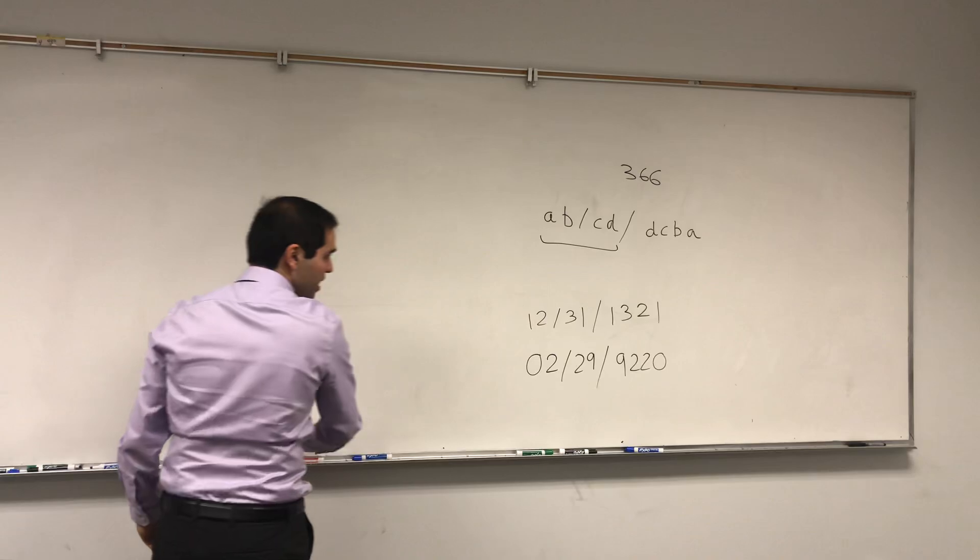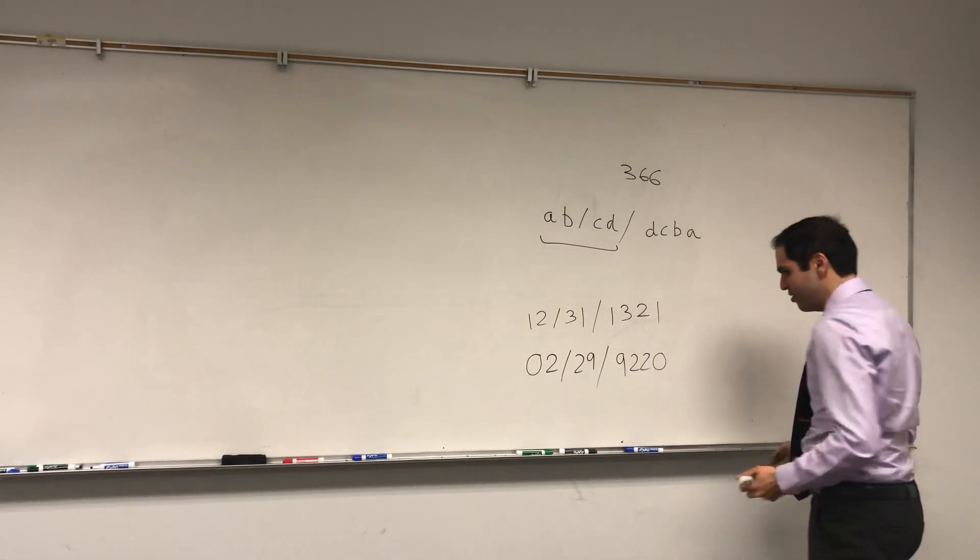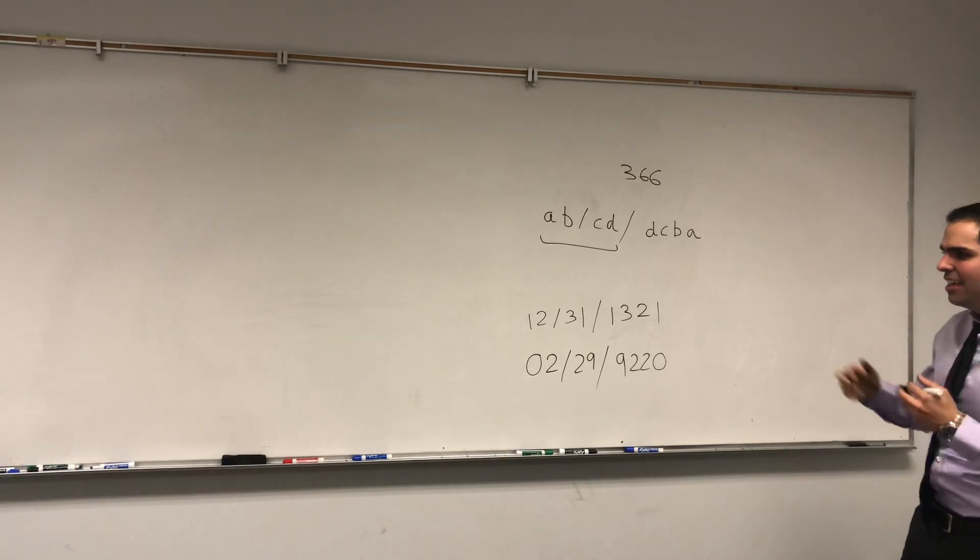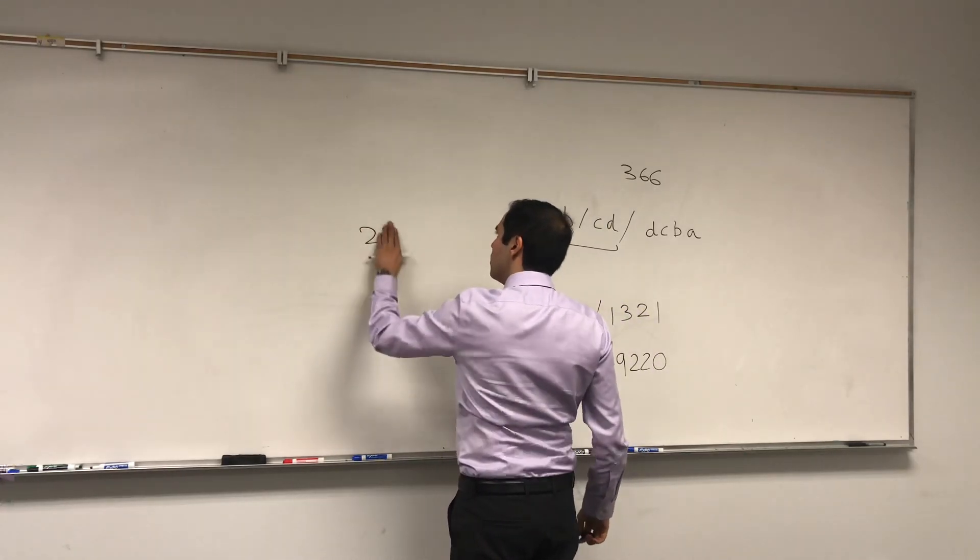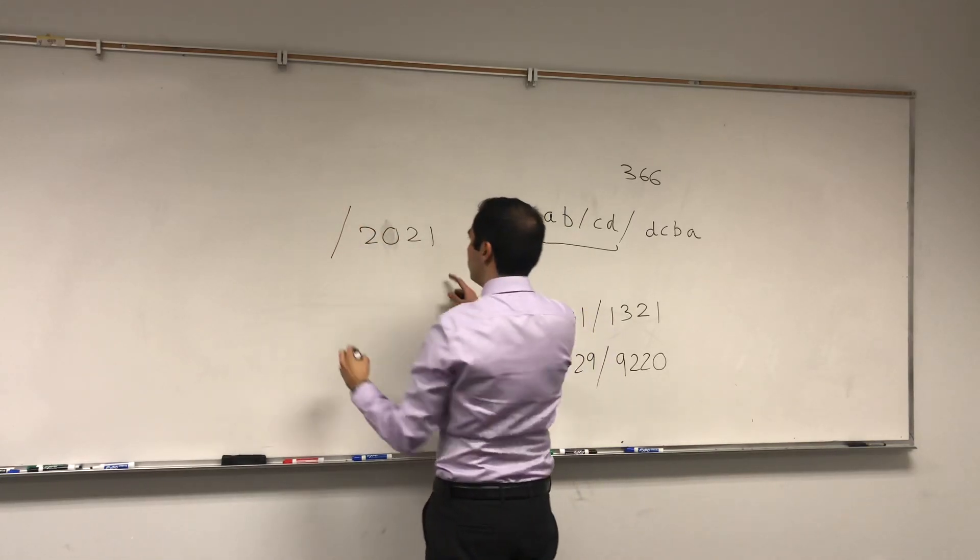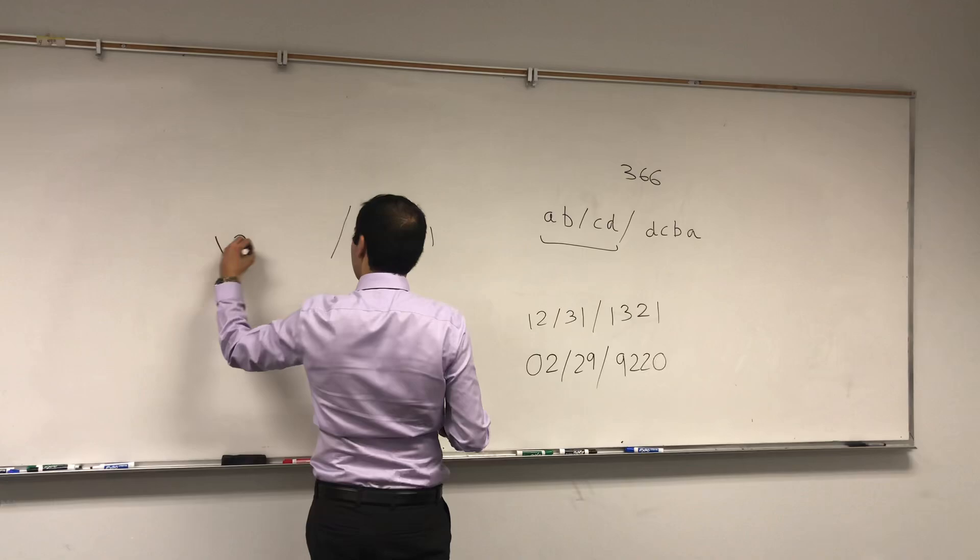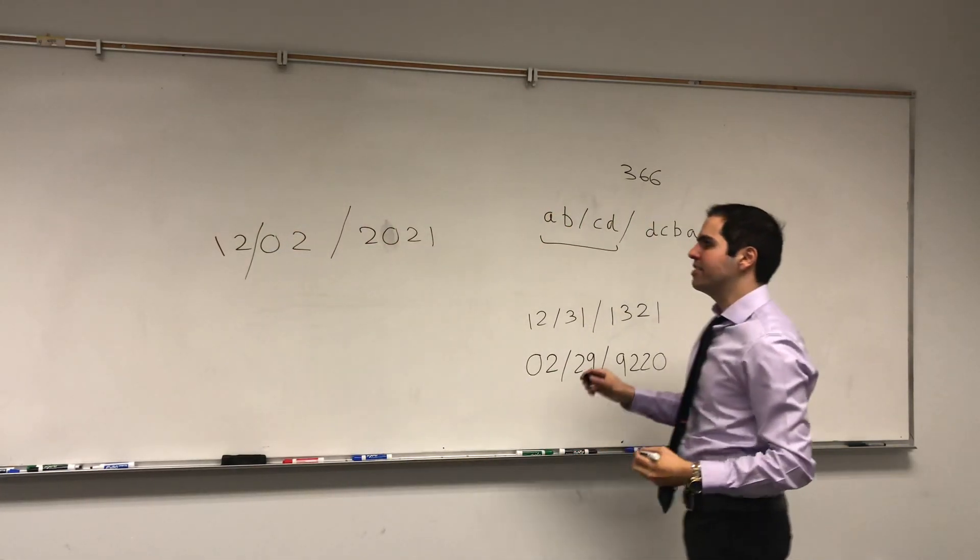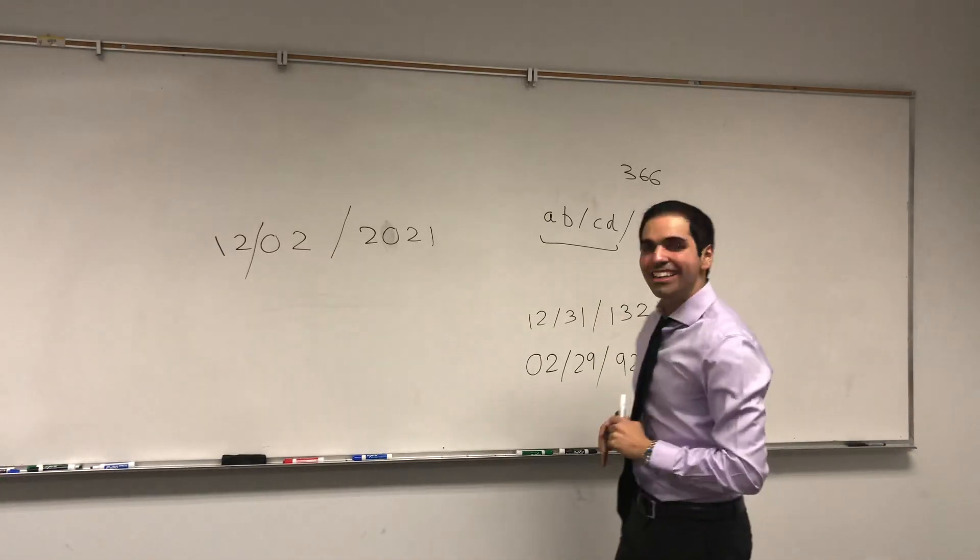And not only that, when is the next one? So let's just try to guess. For 2020, we had February 2nd, 2020. Well, for 2021, that should correspond to 1202. So watch out, December 2nd of next year we have the next palindromic date, at least in the US.